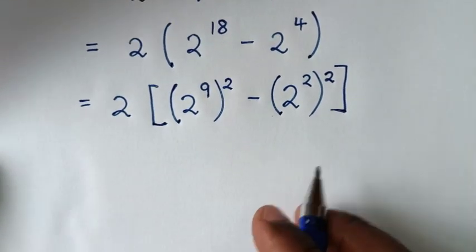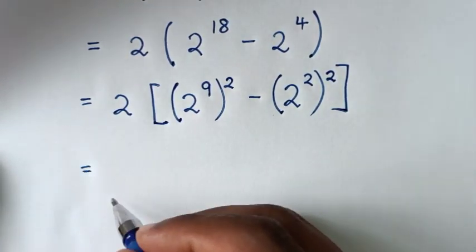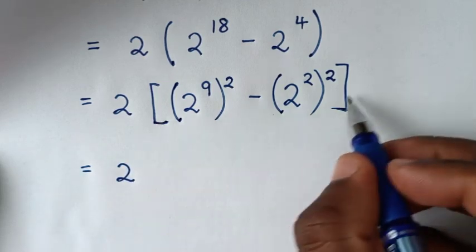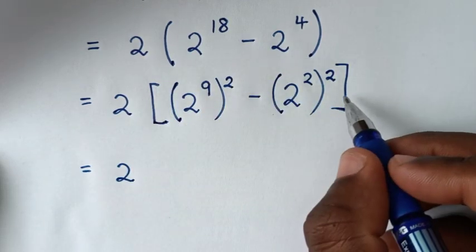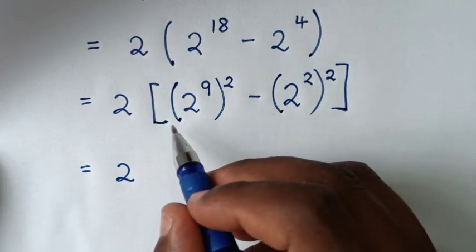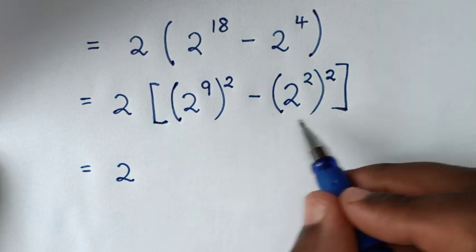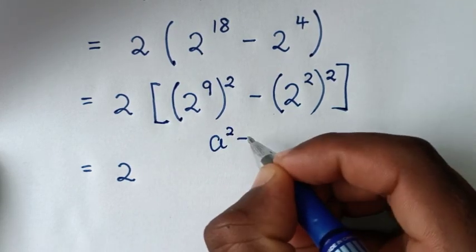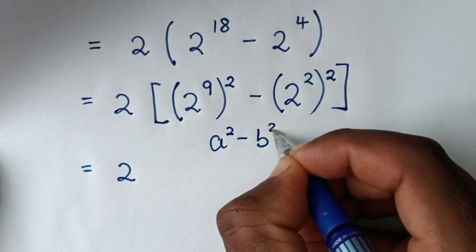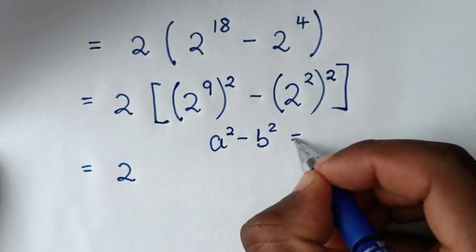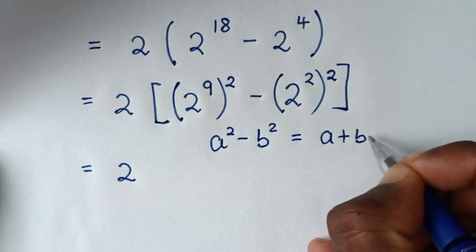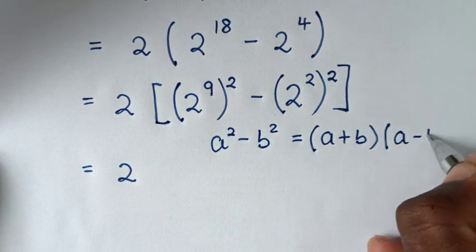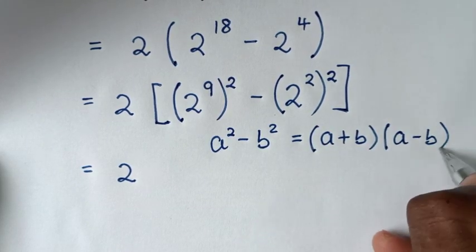In the next step, this is now in the form of a perfect square, so we'll apply the difference of squares rule: a squared minus b squared equals (a plus b) times (a minus b).